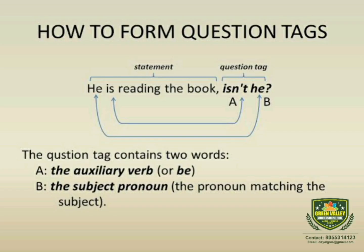Now we will learn how to form question tags. First, keep in mind that if the statement is positive, the question tag will be negative. And if the statement is negative, the question tag will be positive. To form the question tag, it contains two words: the first word is the auxiliary verb or 'be', and the second word is the subject pronoun matching the subject.